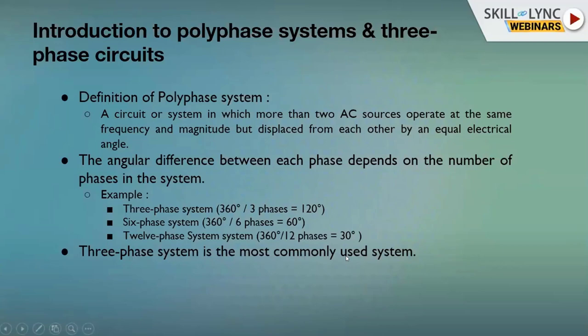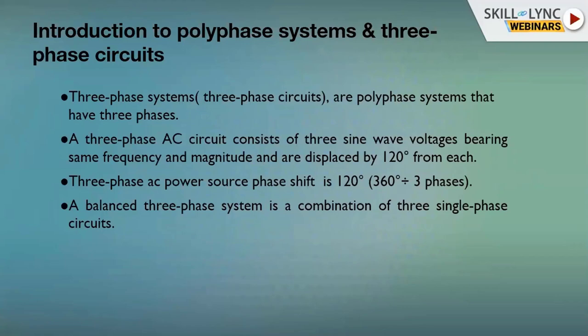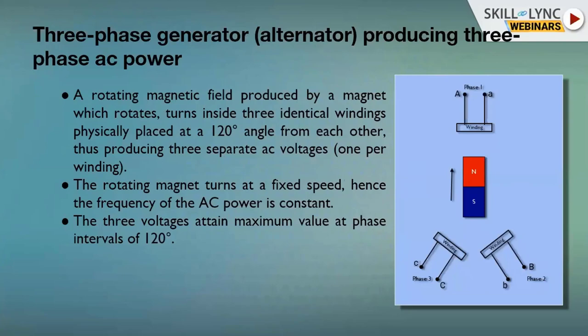Three-phase circuits are polyphase systems with three phases — typically three coils or windings, named R, Y, B phases, or alternatively U, V, W phases. A three-phase circuit consists of three sine wave voltages of the same frequency and magnitude, displaced from each other by 120 degrees. A three-phase AC power source has a phase shift of 120 degrees, and a balanced three-phase system is essentially a combination of three single-phase circuits.